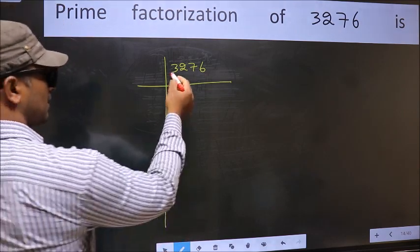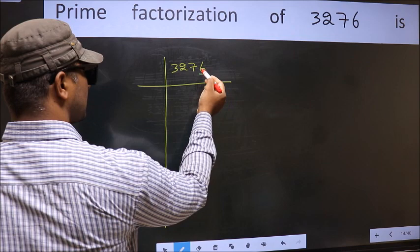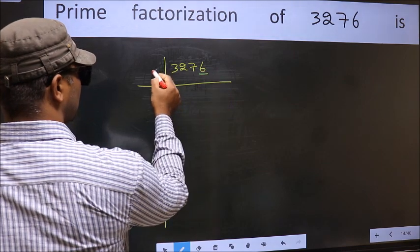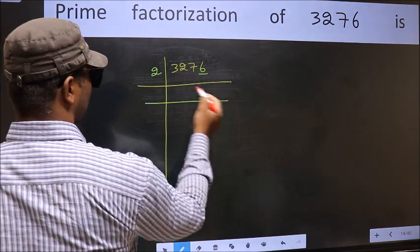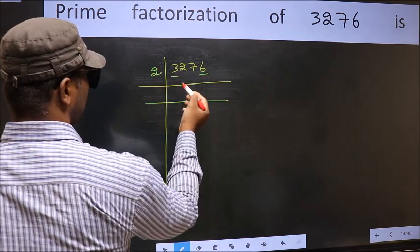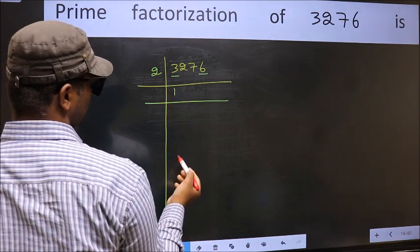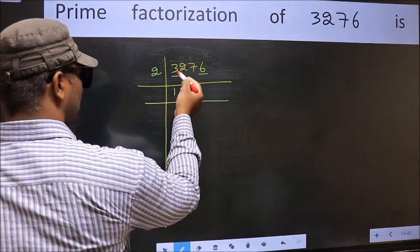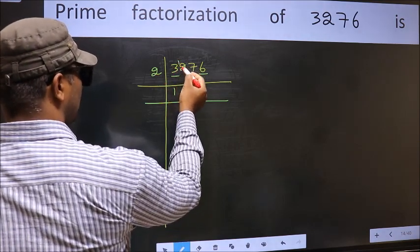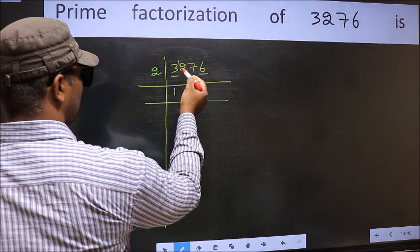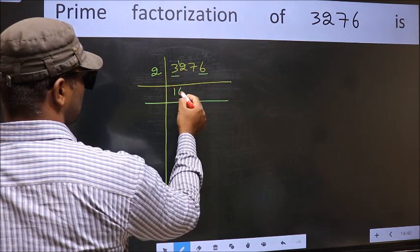In this number, the last digit is 6, so take 2. First number 3. A number close to 3 in the 2 table is 2 times 1 equals 2. 3 minus 2 equals 1, carry forward 12. When do we get 12 in the 2 table? 2 times 6 equals 12.